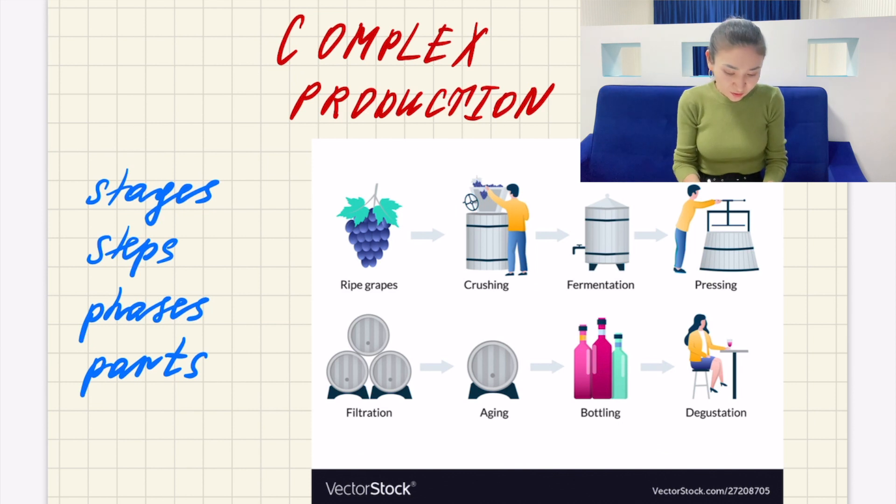So basically we go to the complex and the production and then we start with stages. Let's say here a production of wine where we see grapes, then crushing, fermentation, pressing, filtration, aging, bottling, degustation, all of these steps. So this is basically stages. We could call it stages or steps or phases or parts. These basically are synonyms. We can use any of these words or use them in order to not repeat one word a couple of times.